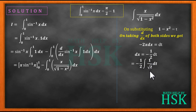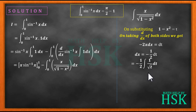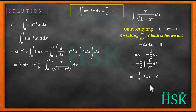Substituting, I get minus 1 by 2 times the integration of 1 upon square root of t dt. Integration of t to the power minus 1 by 2 gives 2 root t, so the 2 and 2 cancel out, giving the value as minus square root of 1 minus x square plus c.